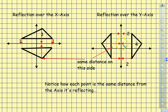Same thing you're doing over here. You're actually 4 away. And then to reflect it, you'd have to count 1, 2, 3, 4 to the left of that y-axis. Because this is what we're reflecting over. Notice how each point is the same distance from the axis it's reflecting.